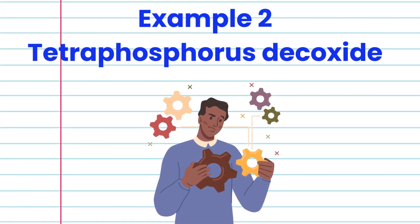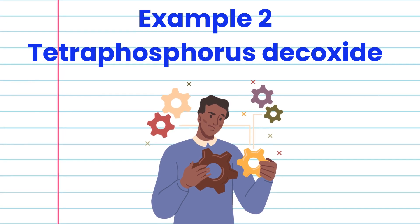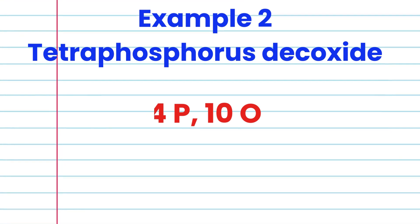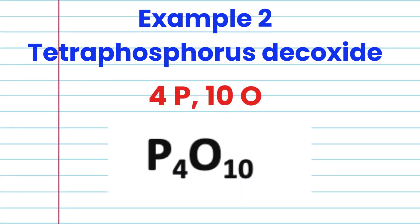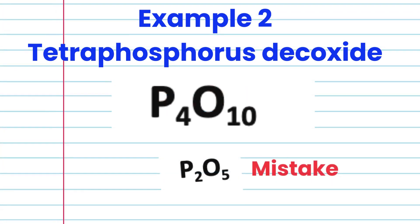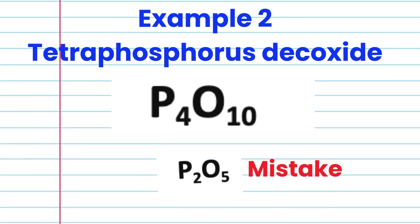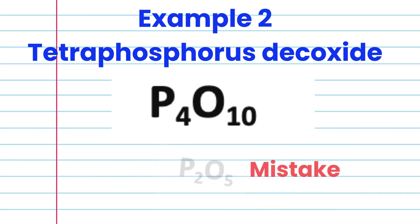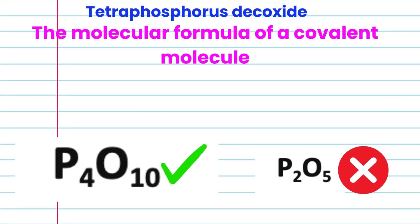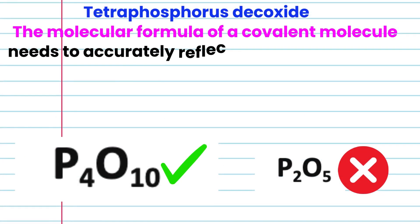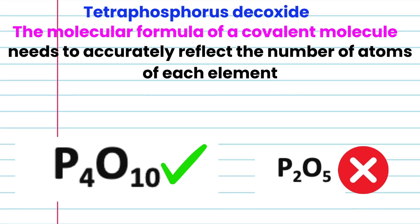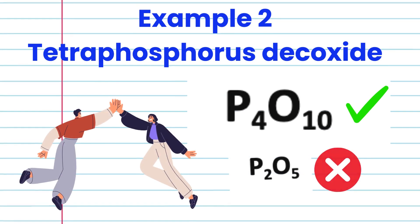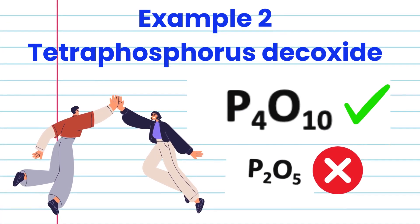Example 2. Let us write the formula for tetraphosphorus decoxide. That is 4 phosphorus and 10 oxygen, so that will be P4O10. Sometimes students reduce this to P2O5 and that's incorrect. The molecular formula of a covalent molecule needs to accurately reflect the number of atoms of each element present in the molecule. So we will leave the formula as P4O10.